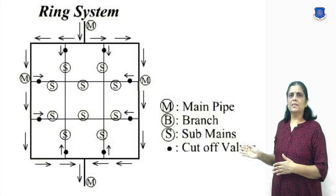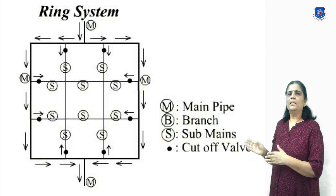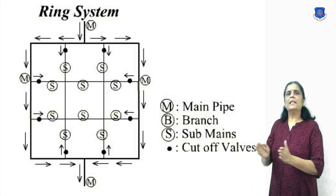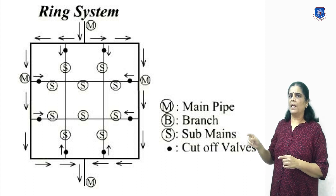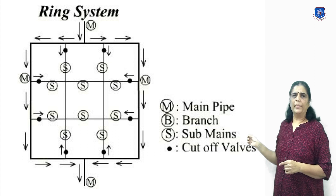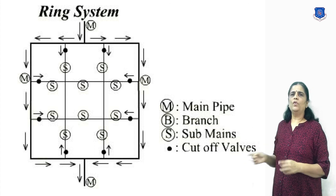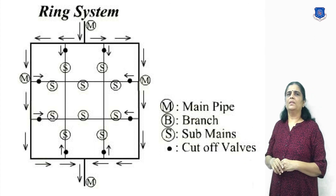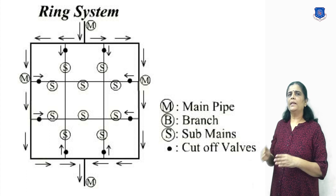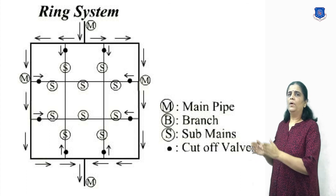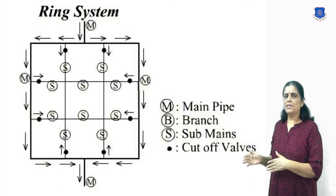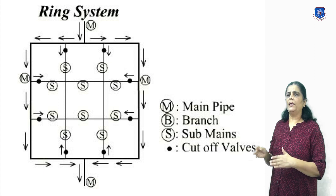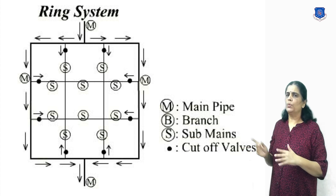Next, the ring-main system. As you can see in the figure, the supply main is laid all along the periphery and some mains branch out from it. This system also follows a pattern similar in character to the dead-end system, so determination of pipe size is easy. Water can be supplied to any point from at least two directions.